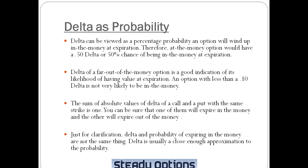Delta can also be viewed as a percentage probability that an option will wind up in the money at expiration. An at the money option would have a 0.50 Delta, or 50% chance of being in the money at expiration. This makes perfect sense because if the stock is, for example, at $50, it has a 50% chance to be above $50 and a 50% chance to be below $50 at expiration. This is, of course, theoretical. The Delta of a far out of the money option is a good indication of its likelihood of having value at expiration — an option with less than 0.10 Delta is not very likely to be in the money.